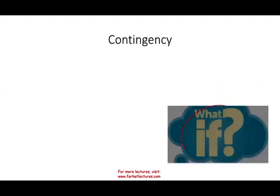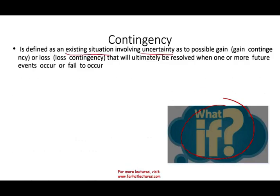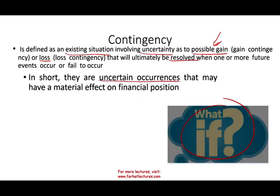What is a contingency? A contingency asks 'what if?' — what if something happened? We have an existing situation: what if we lose a lawsuit? What if we lose a tax dispute with the IRS? It is defined as an existing situation involving uncertainty as to a possible gain or possible loss. If there's a possible gain, we don't have to do anything about it; if it's a possible loss, we have to determine how much to disclose. That loss or gain might be resolved in the future, and users want to know what would happen to them.